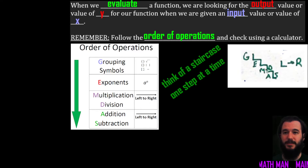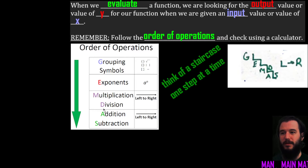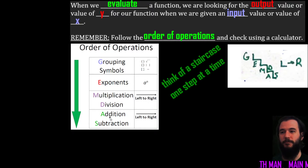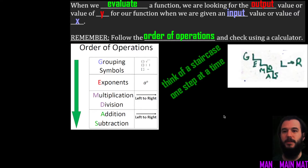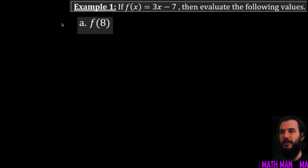Always follow the order of operations. I like to write a little staircase to help: G stands for grouping symbols, E stands for exponents, M and D stand for multiplication and division — remember, it's not strictly in that order, it's whichever comes left to right first. Then lastly you work on addition and subtraction, left to right. Draw that staircase so you have order of operations available at any time.